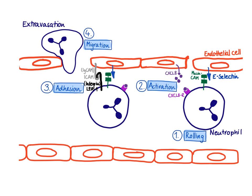First, the neutrophil has to roll along the endothelial lining — it has to slow down. Then it gets activated; that's the second step. This results in a very tight interaction between the endothelial cell and the neutrophil.